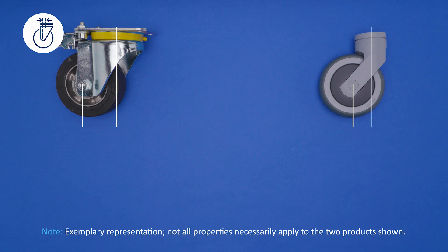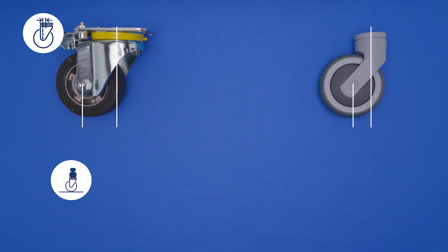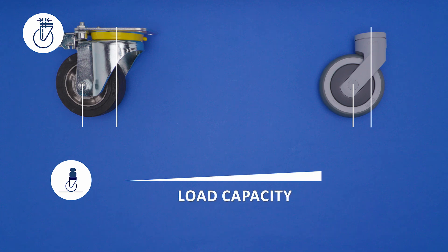Here is an insight into the most important properties regarding the offset. Casters with a greater offset tend to have a lower load capacity, whereas casters with a smaller offset tend to be more resilient.